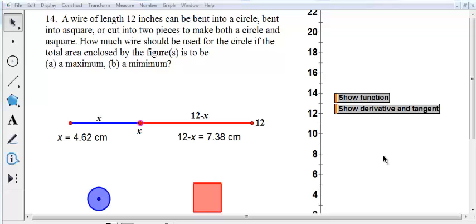How much wire should be used for the circle if the total area enclosed by the figure is to be a maximum or a minimum? So I think the first step, as usual, is to just kind of figure out what's going on with the problem and what a reasonable answer would be.